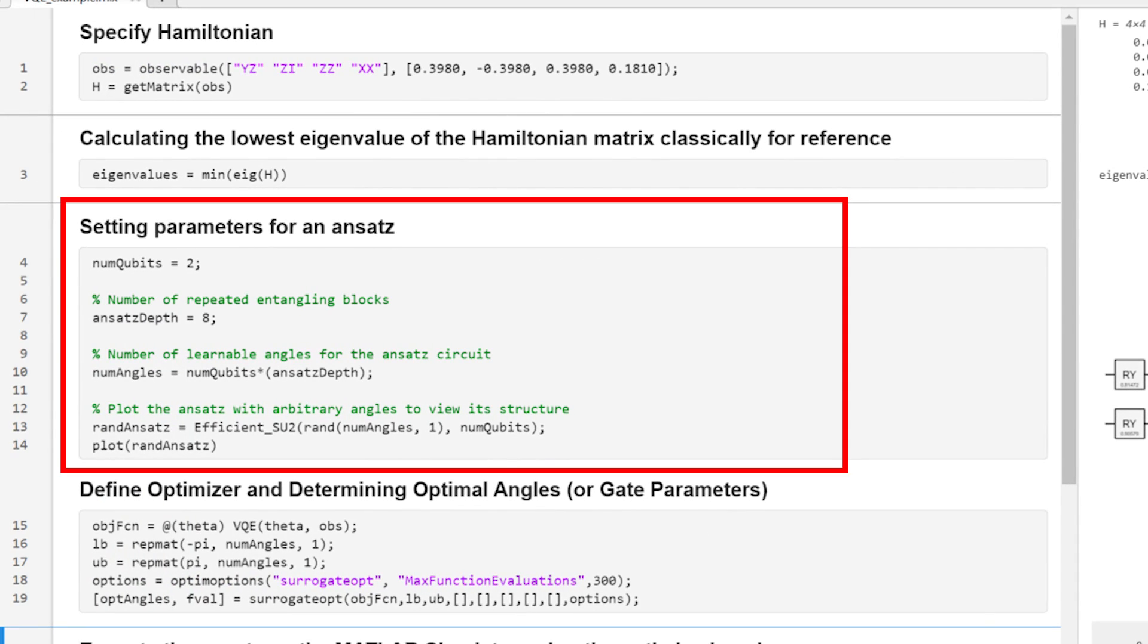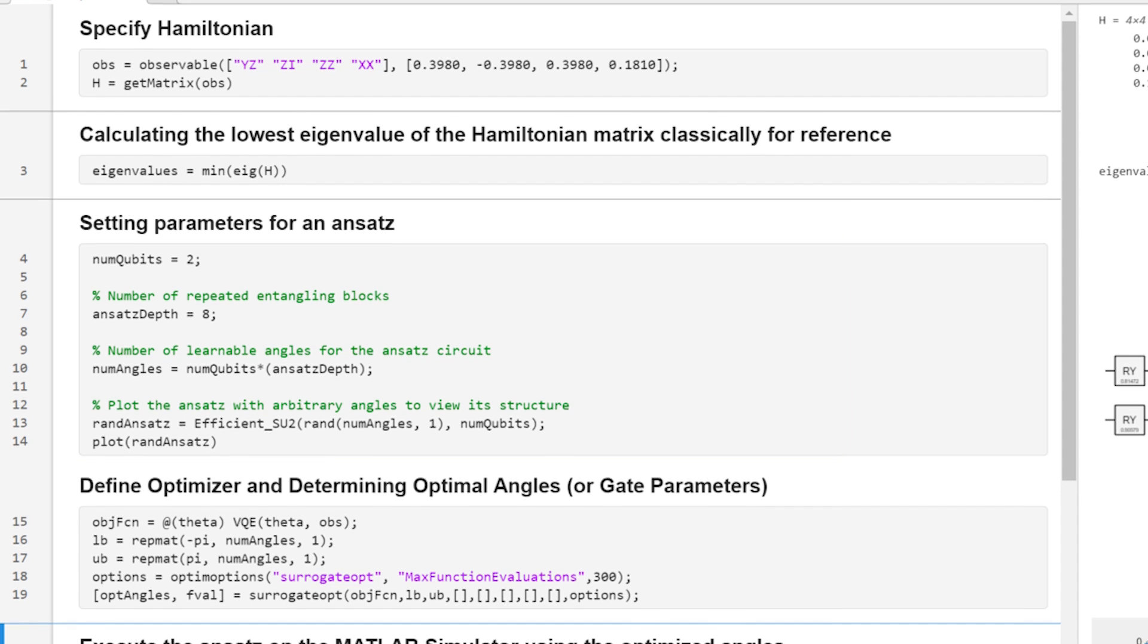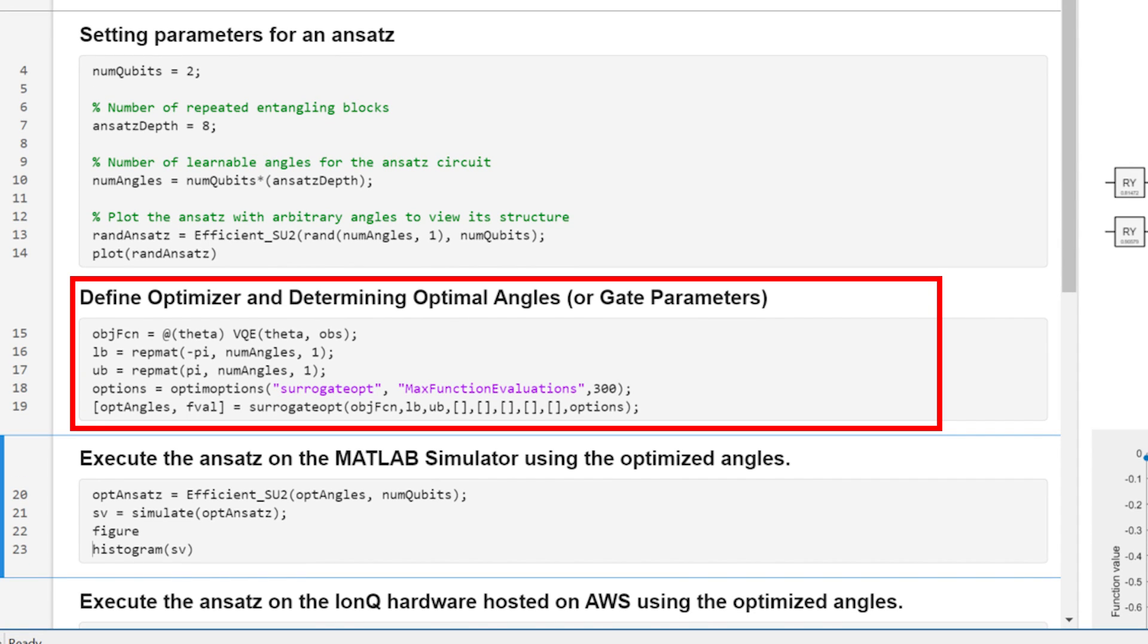We've selected this ansatz for the problem because it's simple and it's compatible with the hardware device on which we're going to run it. Now let's define an optimizer which will minimize to the lowest eigenvalue of the defined Hamiltonian from the parameters of the circuit.